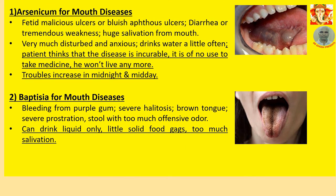Now, homeopathic remedies. Number 1: Arsenic Album for mouth diseases. Indicated for fetid, malicious ulcers or bluish aphthous ulcers. Diarrhea or tremendous weakness. Huge salivation from mouth. Patient is very disturbed or anxious, drinks little water often. Patient thinks the disease is incurable, it is of no use to take medicine, and he won't live anymore. Trouble increases at midnight and midday. The underlined symptoms are general symptoms — these are the most important. When these match with the patient, the medicine acts nicely.